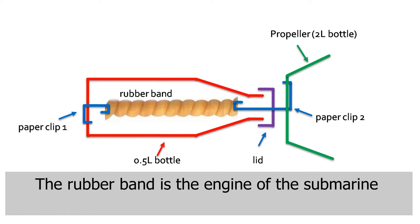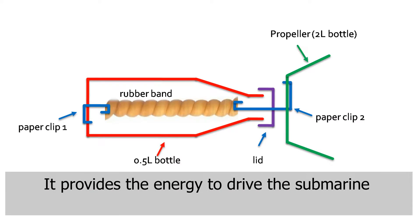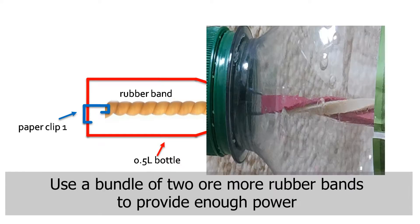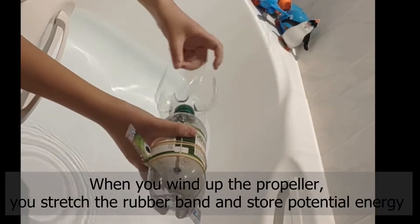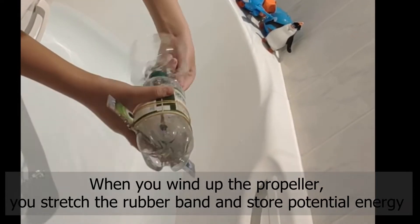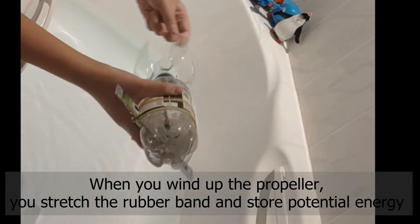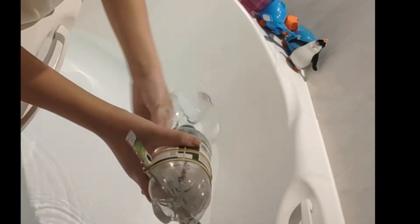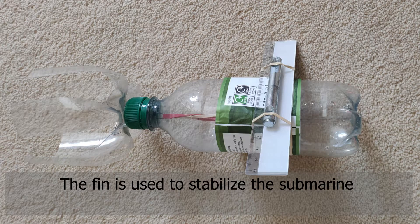The rubber band is the engine of the submarine. It provides the energy to drive the submarine. Use a bundle of two or more rubber bands to provide enough power. When you wind up the propeller, you stretch the rubber band and store potential energy.